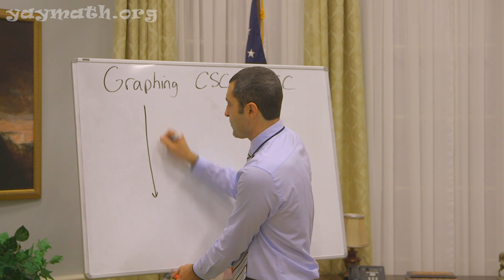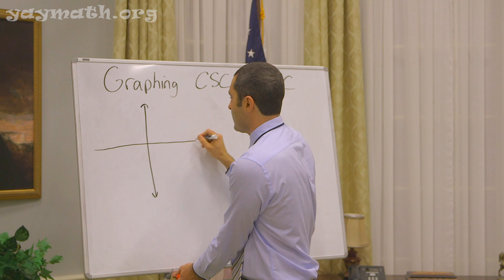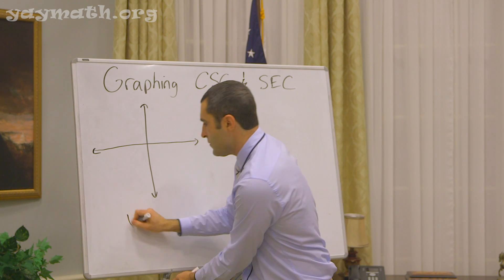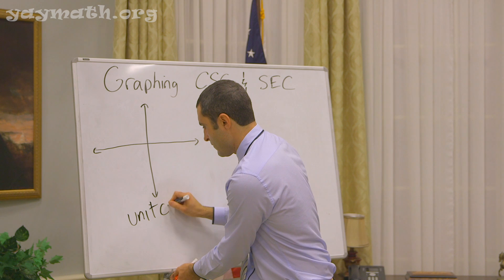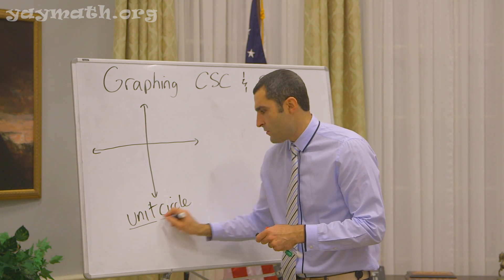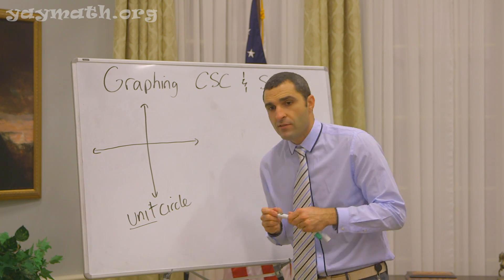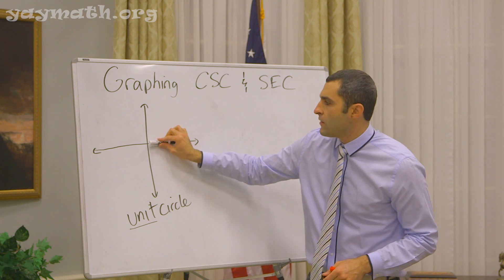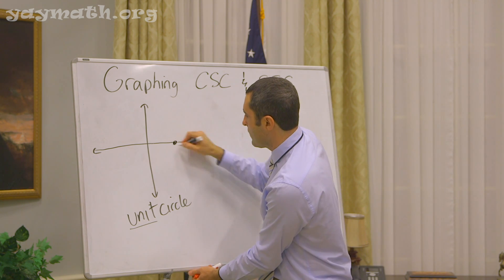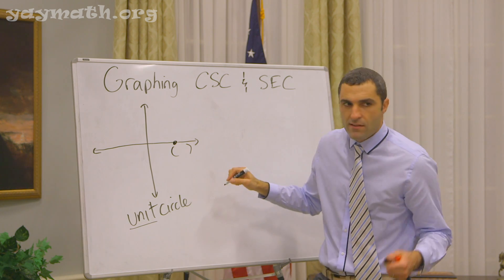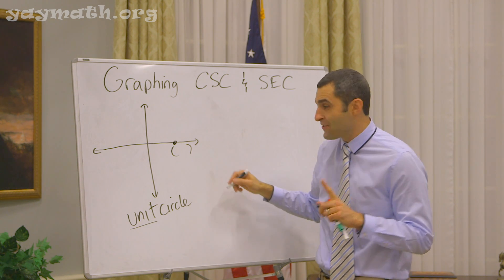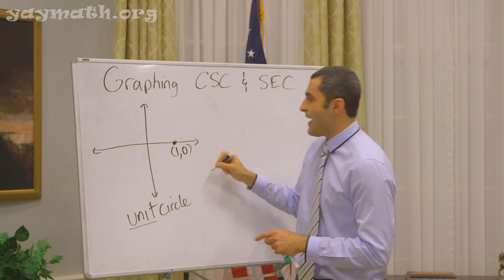Today we're going to be doing graphs of cosecant and secant. I'll remind you what these both are. First, let's do a little exploration on the unit circle again — just to remind us. On the unit circle, what is the radius? Well, what is this point? Zero, one. One, zero. That's why we do this. Good job! We're going to get you.